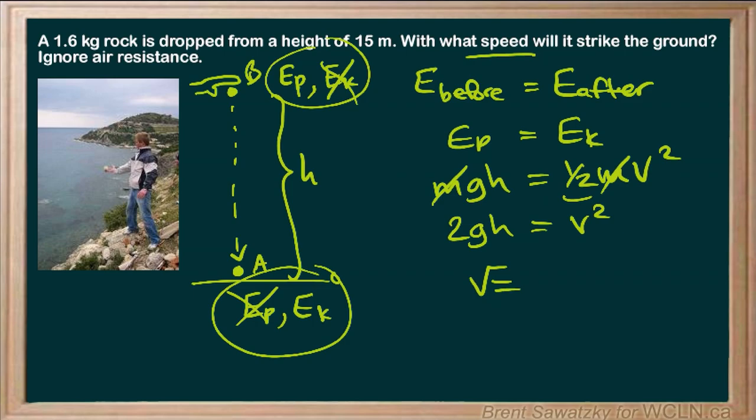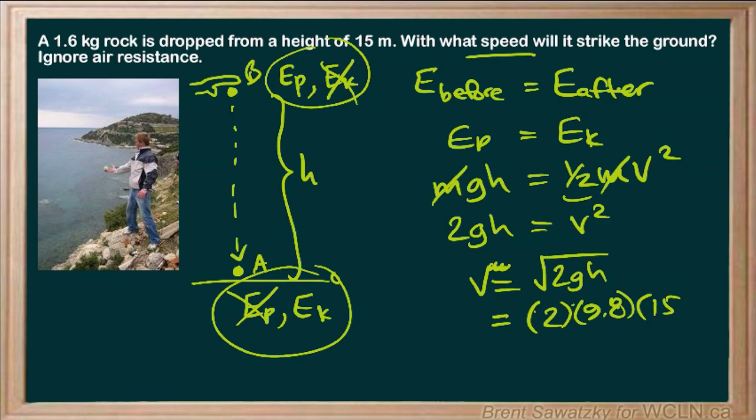We get v equals the square root of 2gh. Plugging in the numbers: square root of 2 times 9.8 times 15, and if we put that into the calculator, we get 17 meters per second.